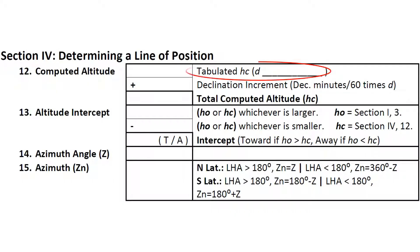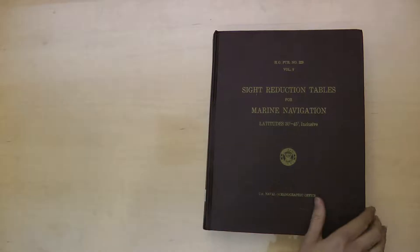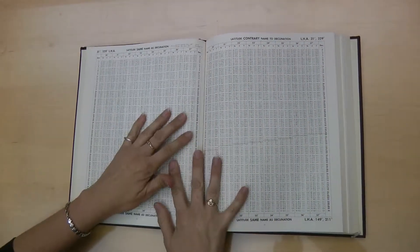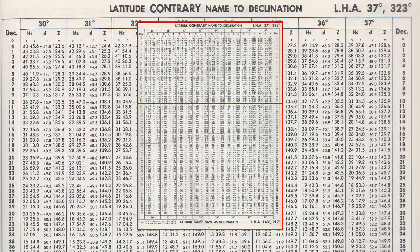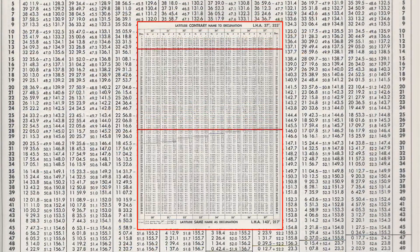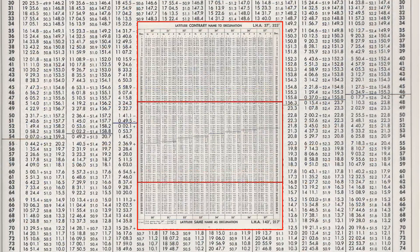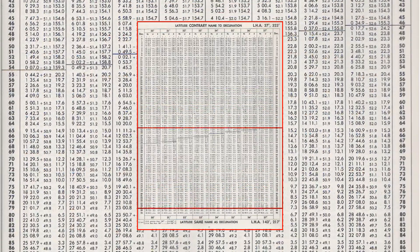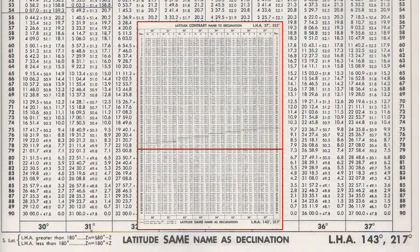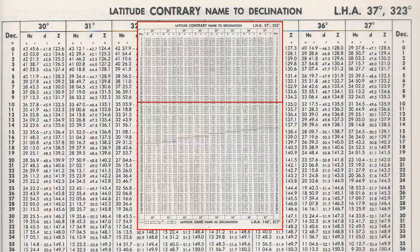First, we find our tabulated HC and D by looking in Publication 229. These books contain the sight reduction tables that do all the spherical trig calculations for you. Each book covers 15 degrees of latitude and uses only whole degrees. If they also included fractions of degrees, the tables would be too large to be practical. Turn to the page for your local hour angle, abbreviated LHA.